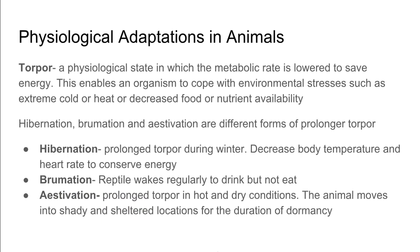Another physiological adaptation is torpor, a type of dormancy where the metabolic rate of an organism is lowered to save energy. It enables organisms to cope with environmental stresses such as extreme heat or cold, and decreased availability of food and nutrients. Three examples of torpor are hibernation, brumation, and aestivation. Hibernation is prolonged torpor during winter, where organisms decrease their body temperature and heart rate to conserve energy.